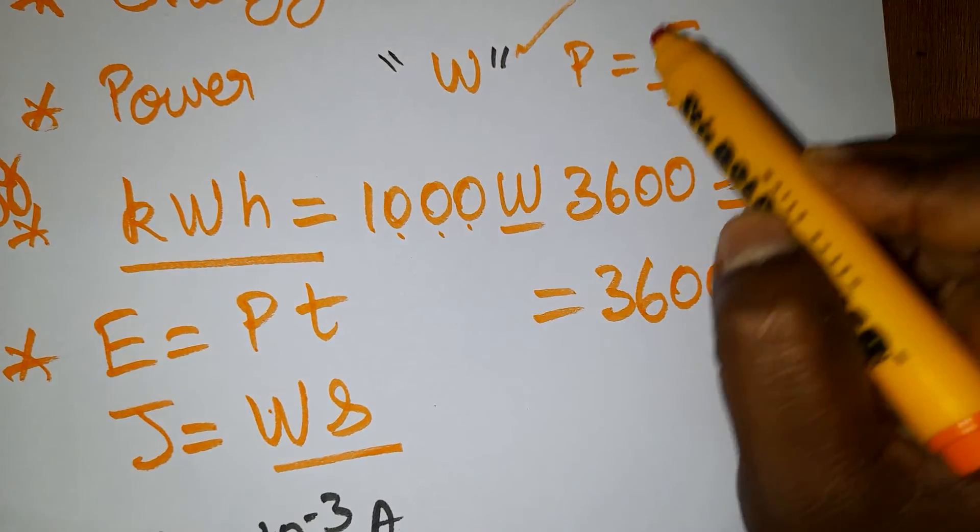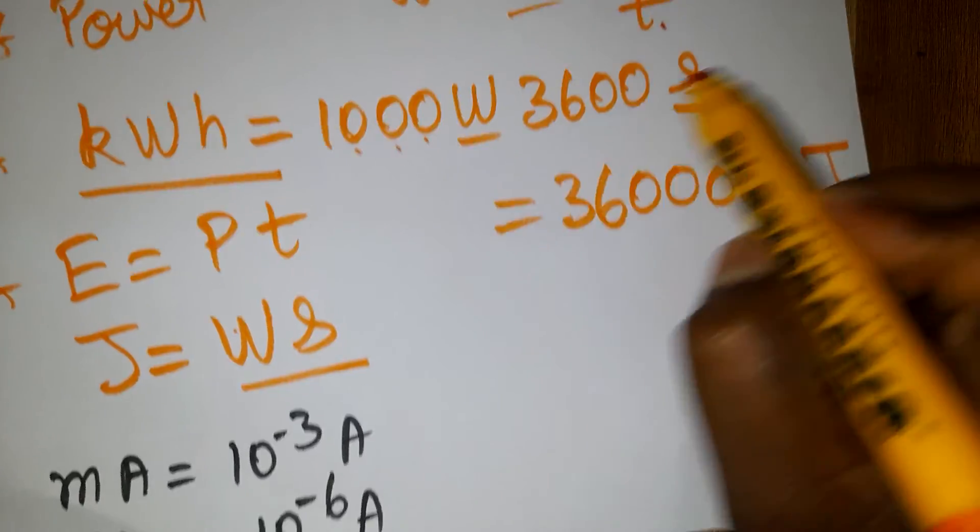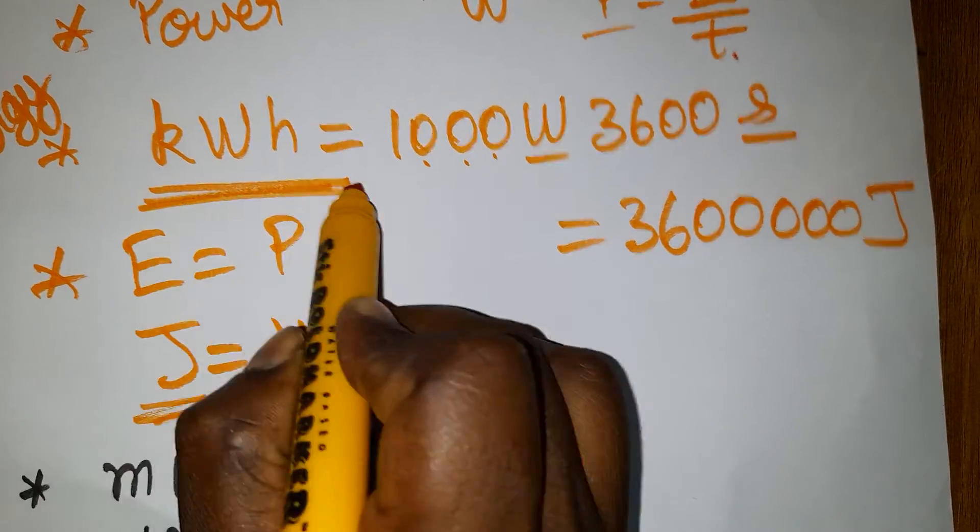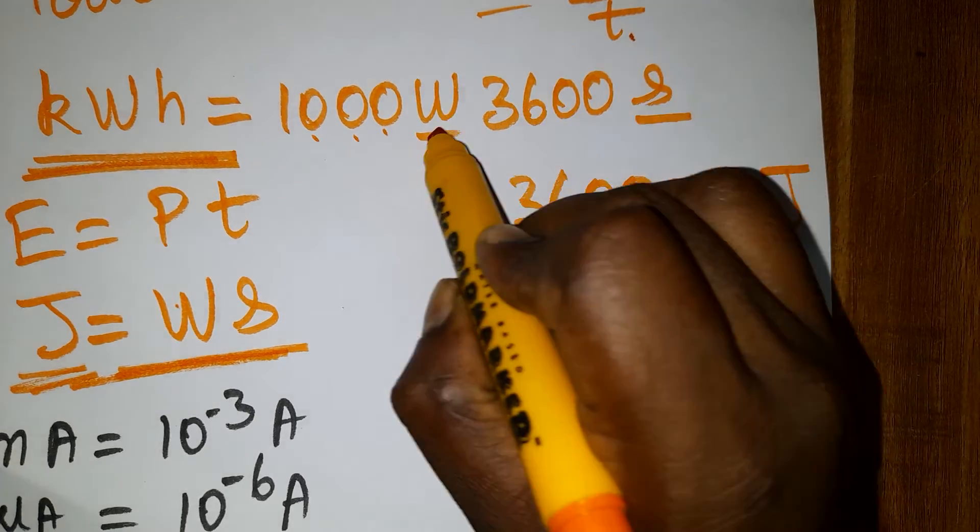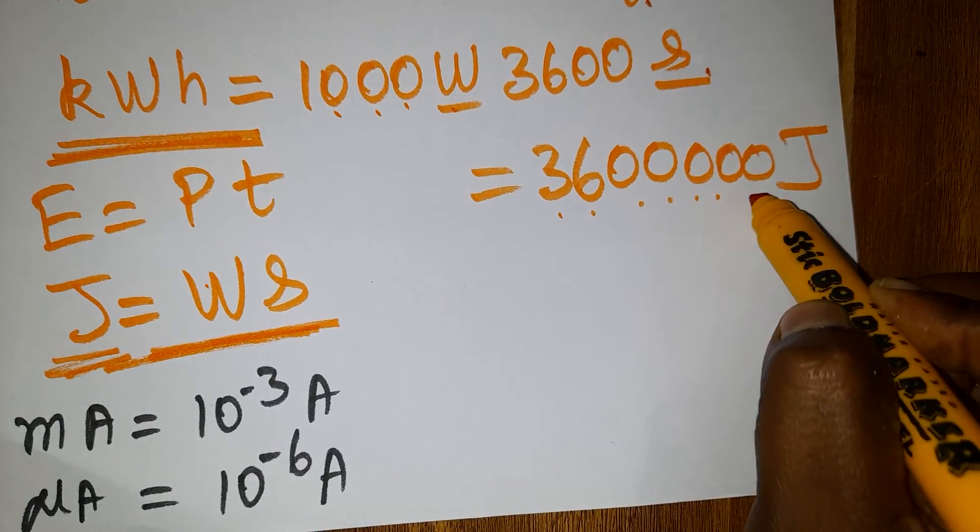Energy unit is joule, power unit is watt. Power equals energy per unit time, so joules can be written as watt-second. Kilowatt-hour equals 3,600,000 joules.